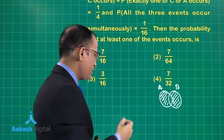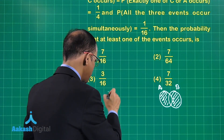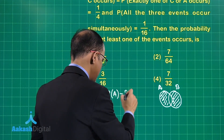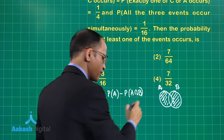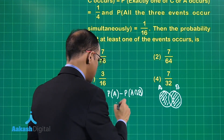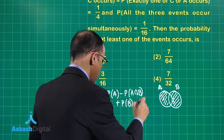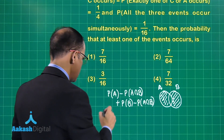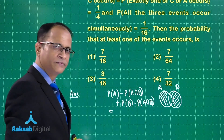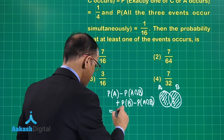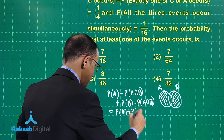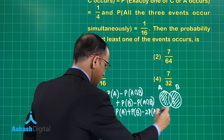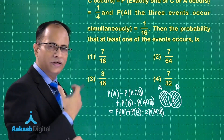The probability of exactly A or exactly B means P(A) − P(A∩B) plus P(B) − P(A∩B), which equals P(A) + P(B) − 2·P(A∩B). This is equation 1, and it is given as 1/4.